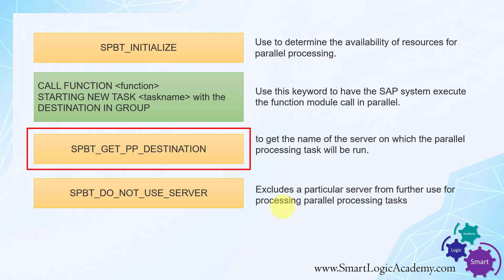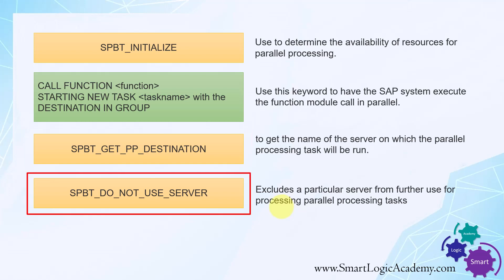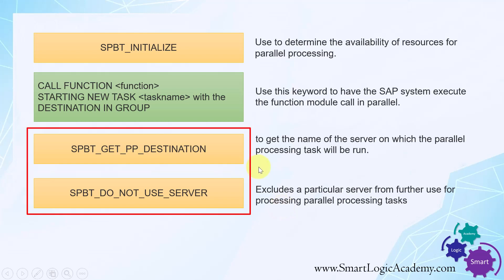SPBT_GET_PP_DESTINATION is used to get the name of the server on which the parallel processing task will run. SPBT_DO_NOT_USE_SERVER is used to exclude a particular server from further use for parallel processing. In most scenarios we don't need to use these two function modules.